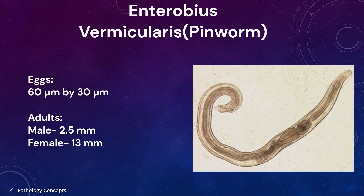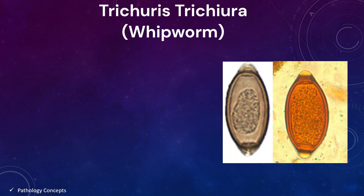Adult worms are also diagnostic when found in the perianal area or during anorectal or vaginal examinations. Adult male Enterobius vermicularis measures up to 2.5 mm long, and adult females measure up to 13 mm long.